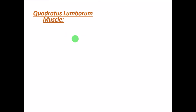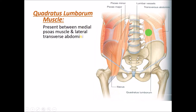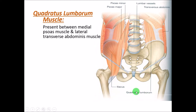The third muscle is the quadratus lumborum, visible on either side. It is positioned medially to the psoas major (and psoas minor together called the psoas muscle) and laterally to the transverse abdominis — the abdominal wall muscle. So the quadratus lumborum lies between the psoas medially and transverse abdominis laterally.